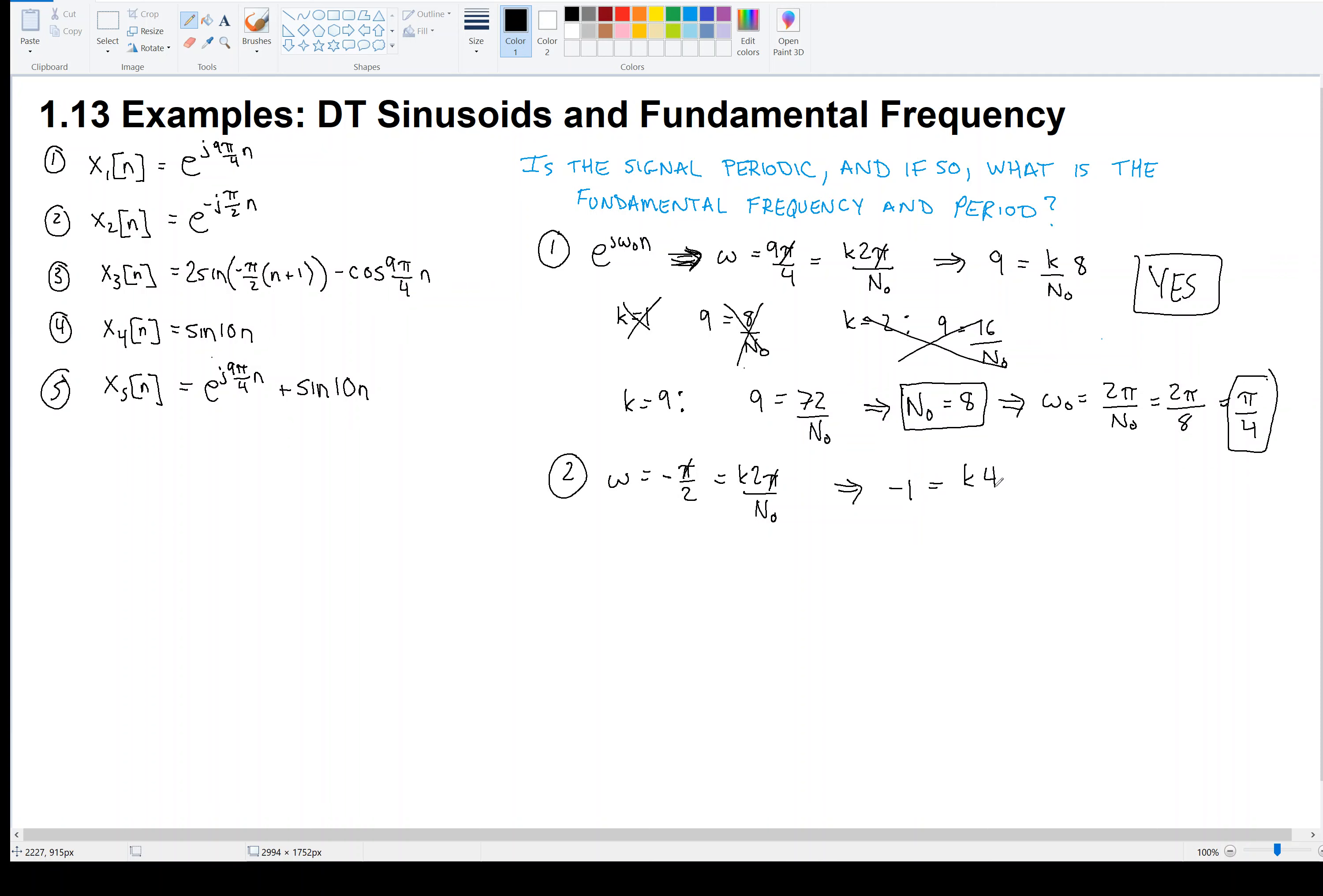Try k equals minus 1. So now we would have minus 1 equals minus 4 over n₀. So the question is, can I pick an n₀ such that minus 4 over n₀ is minus 1, an integer n₀? And yes, I can. And n₀ is equal to 4. That's the fundamental period. So yes, signal 2 is periodic. Its fundamental period is 4, and that means its fundamental frequency is 2π over 4, which is equal to π over 2. Big surprise, right? You could just look at signal 2 and say that its fundamental frequency is π over 2.